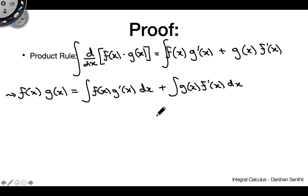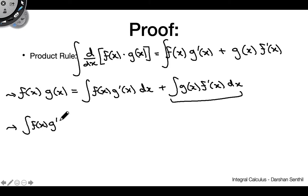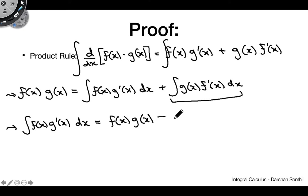Now all I'm going to do is take the g(x)f'(x) portion and subtract it over to the other side of the equation. So I'm left with: the integral of f(x) times g'(x) dx equals f(x) times g(x) minus the integral of g(x) times f'(x) dx. And this is basically the entirety of the math portion of this proof.